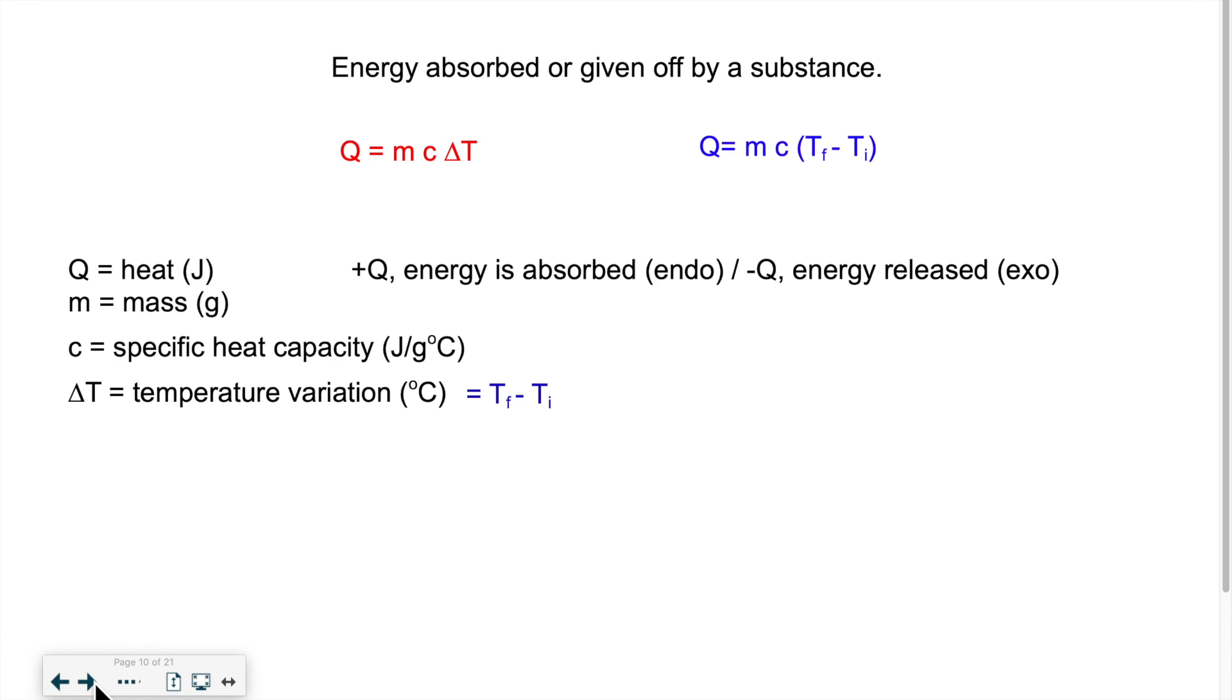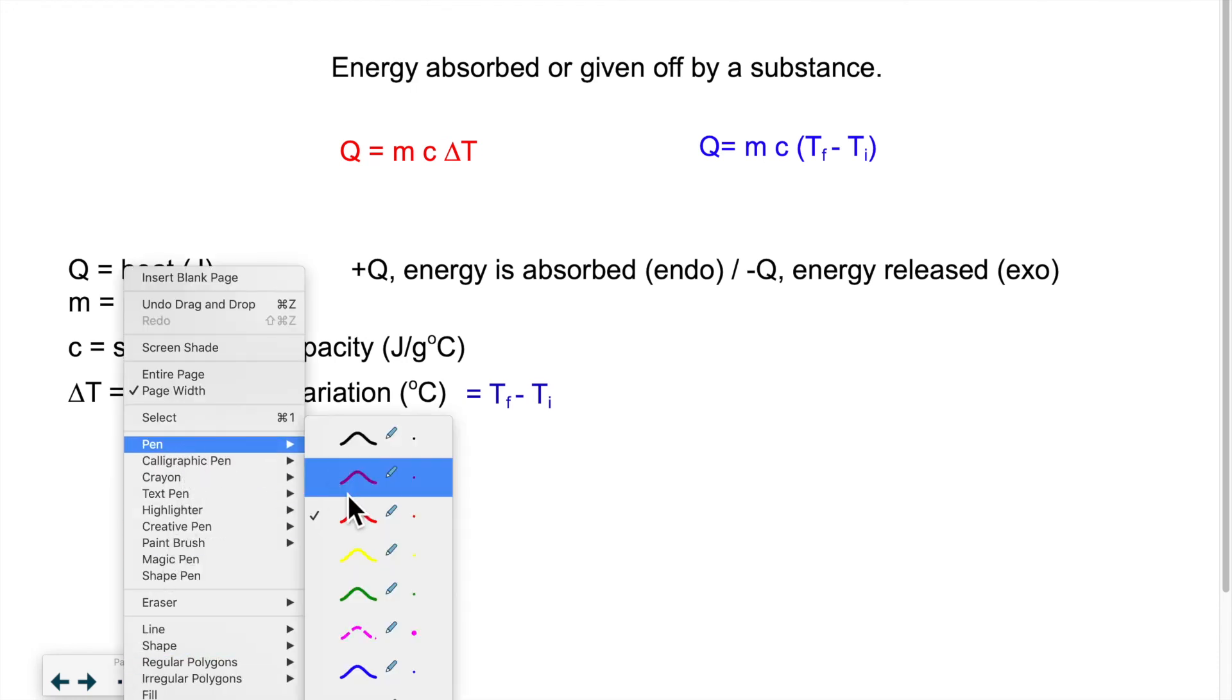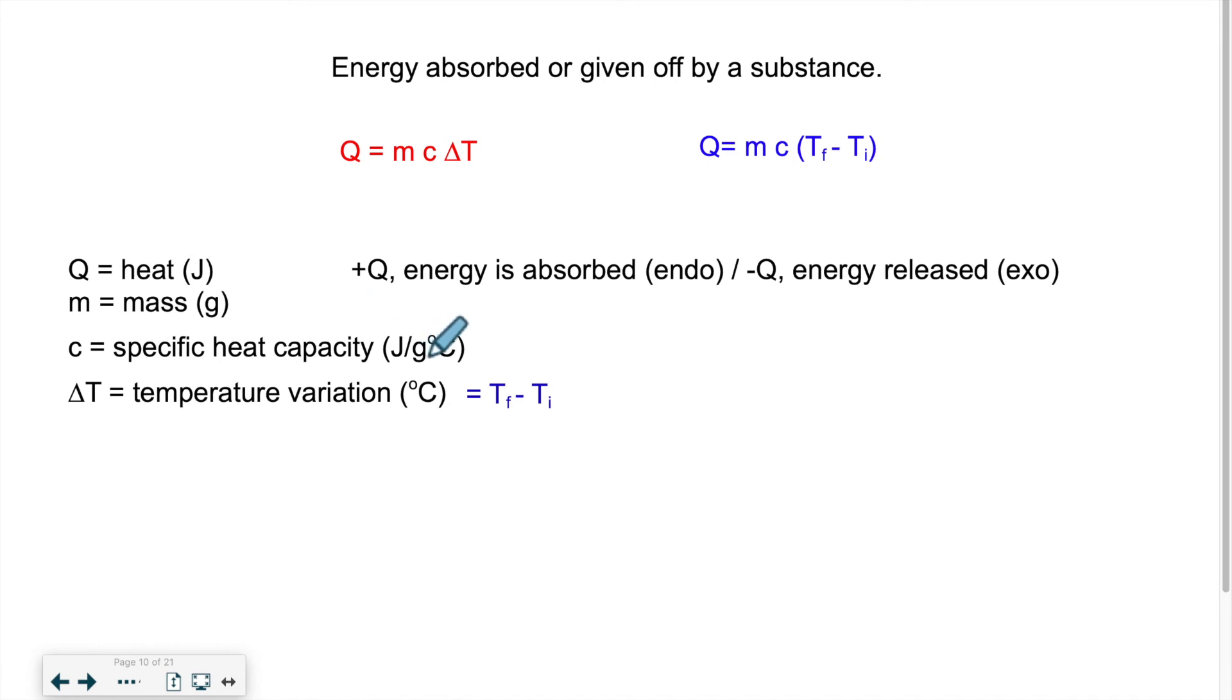Now, knowing this, we know that all these factors influence how much heat can be transferred. What do we do with this? We can calculate the amount of energy or heat transferred if we multiply the mass, the specific heat capacity, and the variation of temperature. By multiplying these three factors, we actually get the total amount of energy transferred in or out of a substance. So we've determined that heat is measured in joules, the mass is in grams, specific heat capacity is in joules per gram degree Celsius, and the temperature variation is in Celsius. We can break it down into final temperature minus initial temperature. Depending on if the substance is gaining energy, we'll say it's endothermic and the value should be positive. If the energy is released by the substance, it's exothermic and the value should be negative. So here you have the general equation, but if you break it down for delta T into final minus initial, you can also use this version.